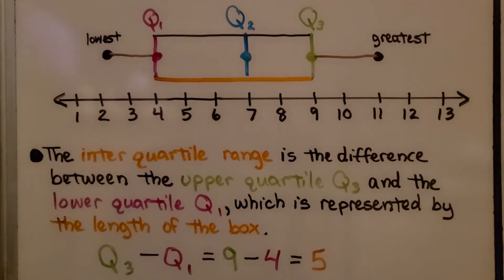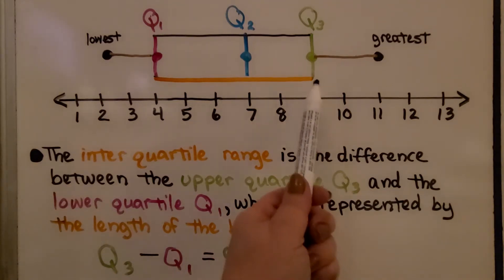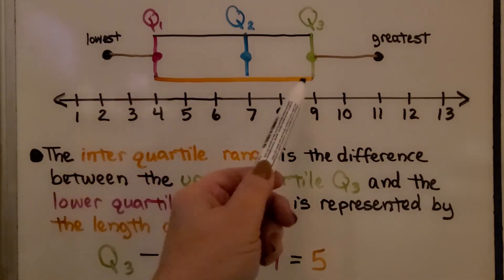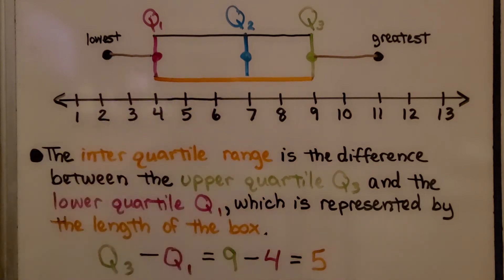The interquartile range is the difference between the upper quartile Q3 and the lower quartile Q1, which is represented by the length of the box. We could do Q3 minus Q1, so we'd have 9 minus 4. We would know that the interquartile range is 5.